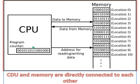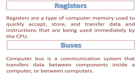The program counter holds the address of the next instruction to be executed. Registers are a type of computer memory used to quickly accept, store, and transfer data and instructions that are being used immediately by the CPU. Because computer speed is very high and billions of instructions are fetched from memory, the CPU stores data into registers as temporary memory.